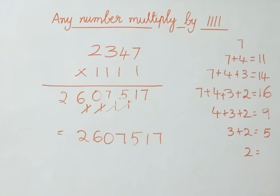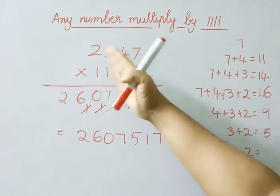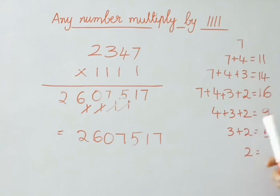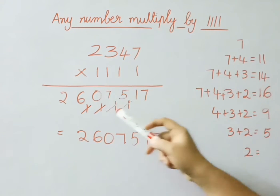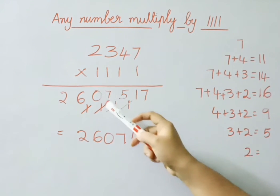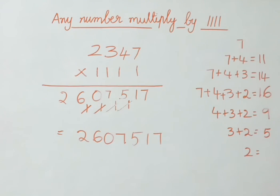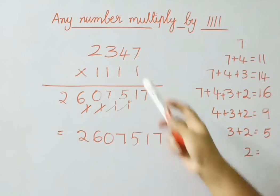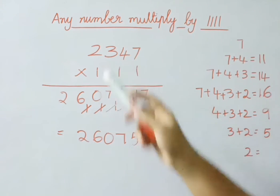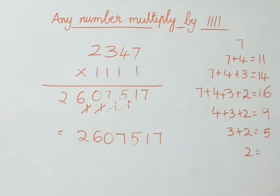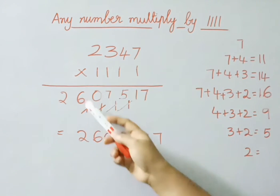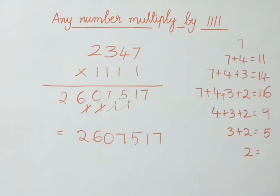Now add the last 3 digits: 4 plus 3 plus 2 — that means 9. Add carry 1, we get 10. So 0, carry 1. Now add last 2 digits: 3 plus 2 is 5, with carry 1 that is 6. Add the last digit as it is. So we got this answer.